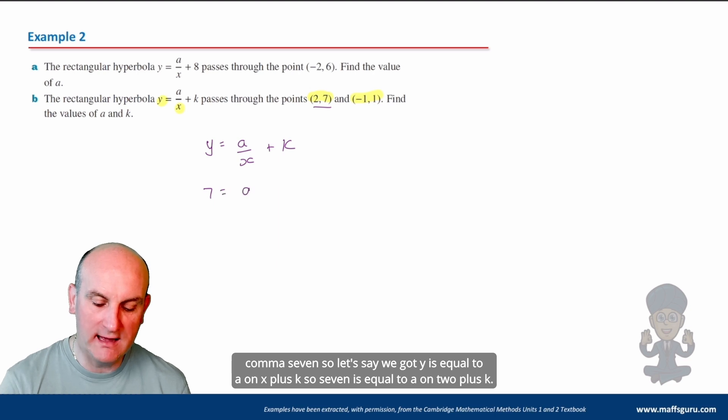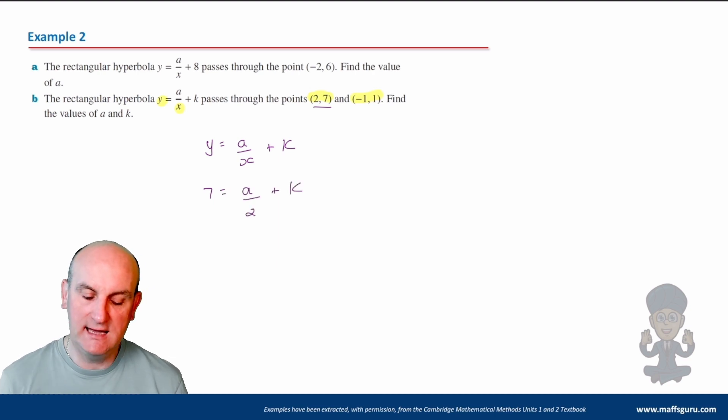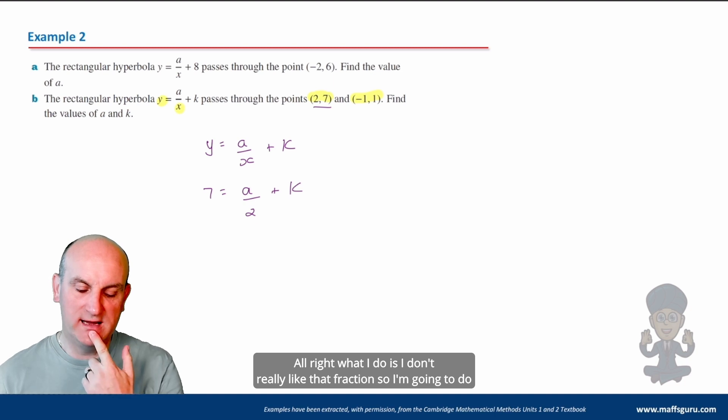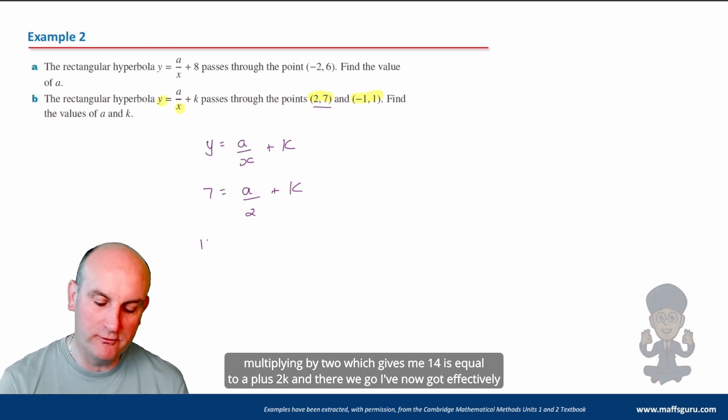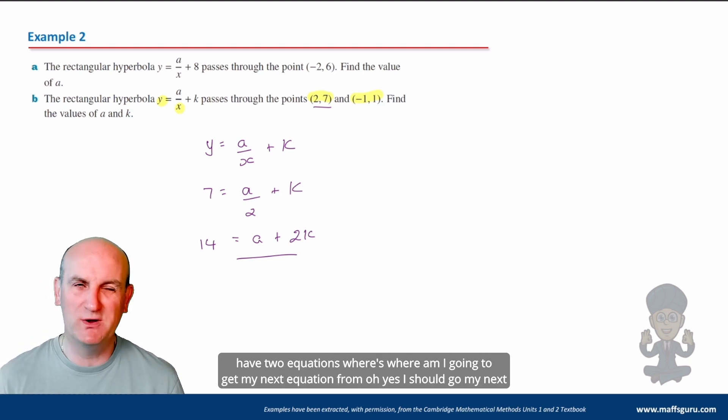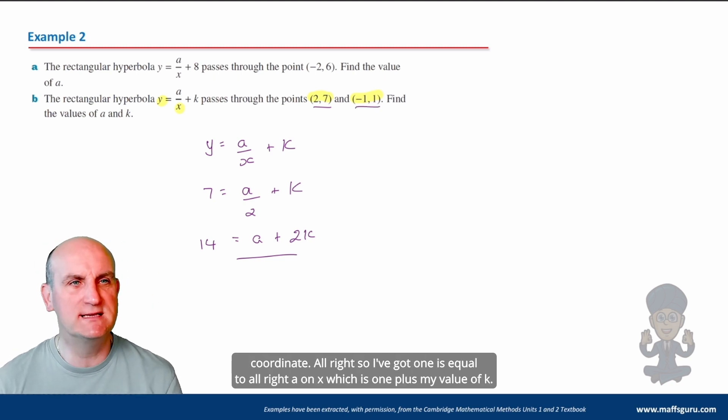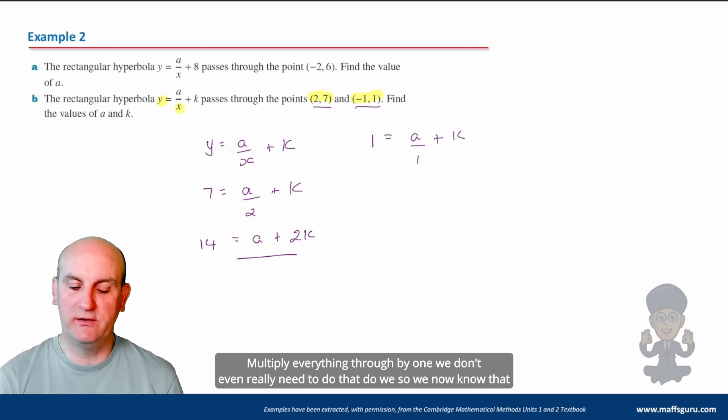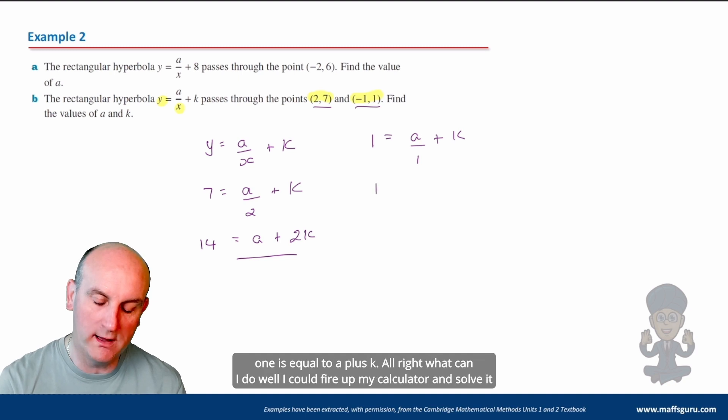So we do the first coordinate first, (2, 7). So let's say we've got y is equal to a/(x+k). So 7 is equal to a/2 plus k. All right. What I do is I don't really like that fraction. So I'm going to do multiplying by 2, which gives me 14 is equal to a plus 2k. And there we go. I've now got effectively one half of a simultaneous equation. I've got two unknowns. And to be able to solve that, I've got to have two equations. Where am I going to get my next equation from? Oh, yes. My next coordinate.